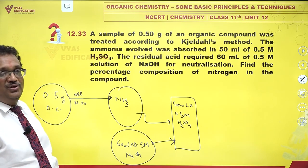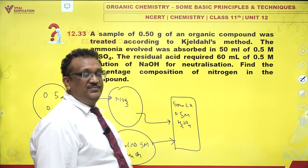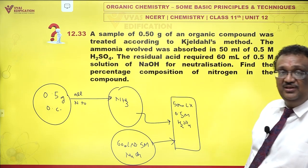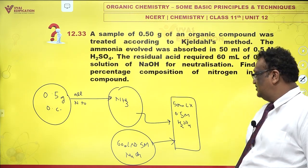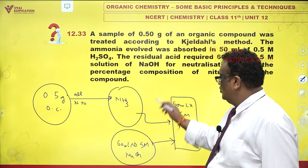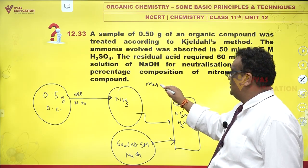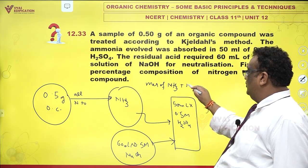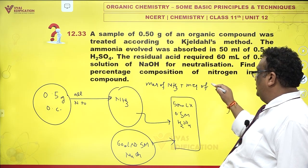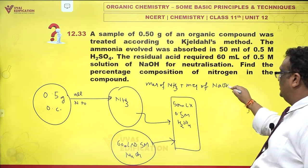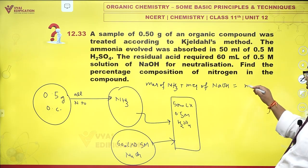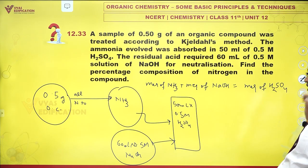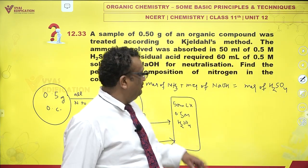Find the percentage of nitrogen in the compound. Total milliequivalents of acid equals total milliequivalents of base. So, milliequivalents of ammonia plus milliequivalents of NaOH equals milliequivalents of H2SO4. This is the basic concept.